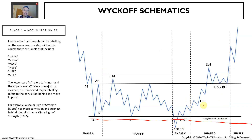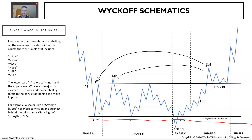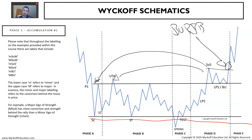You have last points of support within phase D, and a sign of strength which overcomes all previous resistance - including the up-thrust action and the automatic rally high. Following the sign of strength in phase D, you tend to have a last point of support or backing up action. We're going to look at how to trade that - I refer to it as the backing up reversal breakout. So the three entries we'll look at are: trading springs, sign of strength breakouts, and backing up reversal breakouts.